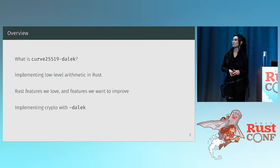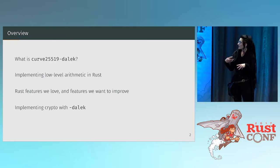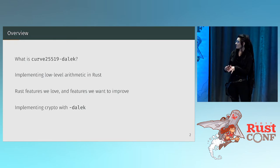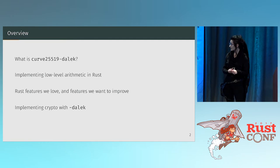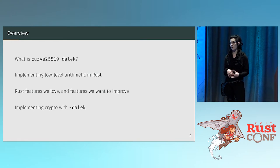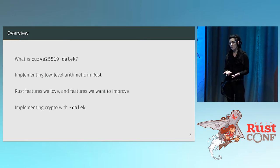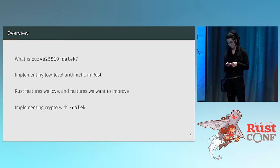What is curve25519-dalek? Harry is going to talk about implementing low-level arithmetic and field arithmetic in Rust. Then we're going to talk about some things about Rust that we found really nice and some things we think could be better. And then we'll go over some of the other crypto we've implemented using our library.